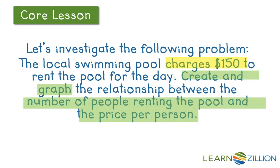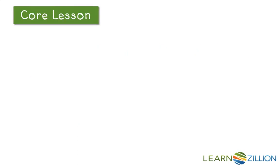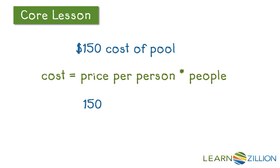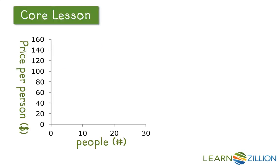Using that information, we should be able to translate into our function. We know that the pool costs $150. We also know that the cost of something, if you're splitting it amongst people, is equal to the price per person times the number of people. So our function is: 150 equals price times people.